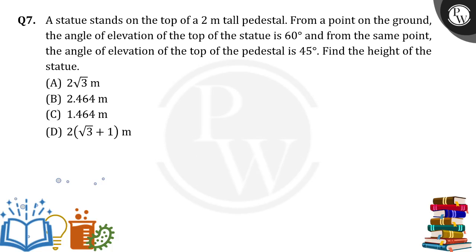Hello everyone, a statue stands on the top of a 2 meter tall pedestal. From a point on the ground, the angle of elevation of the top of the statue is 60 degrees, and from the same point, the angle of elevation of the top of the pedestal is 45 degrees. Find the height of the statue.